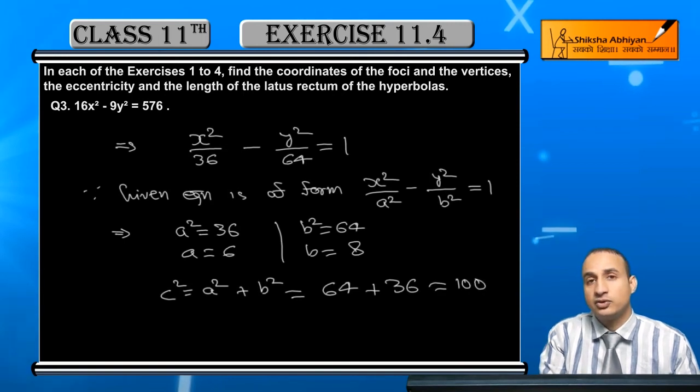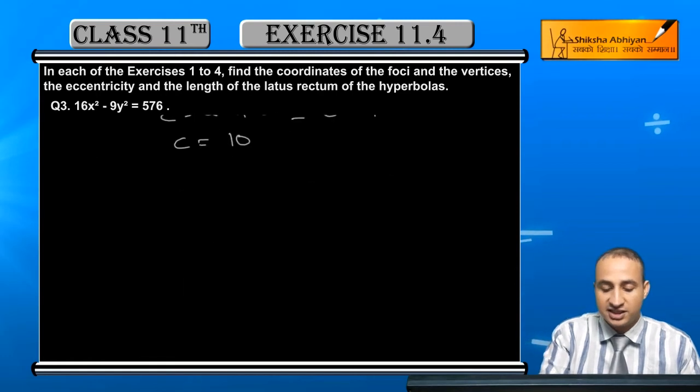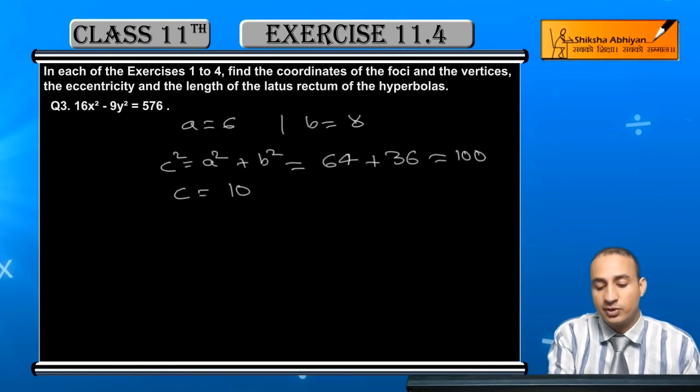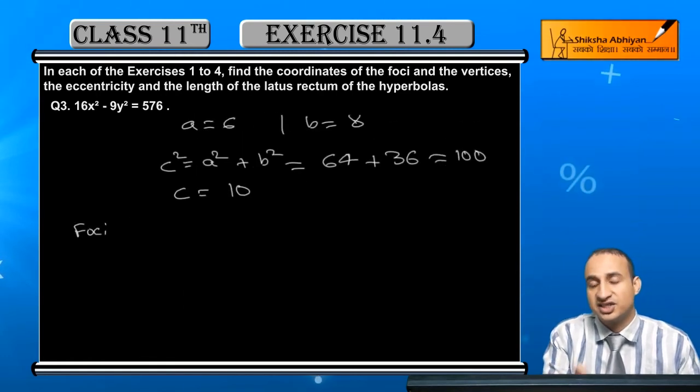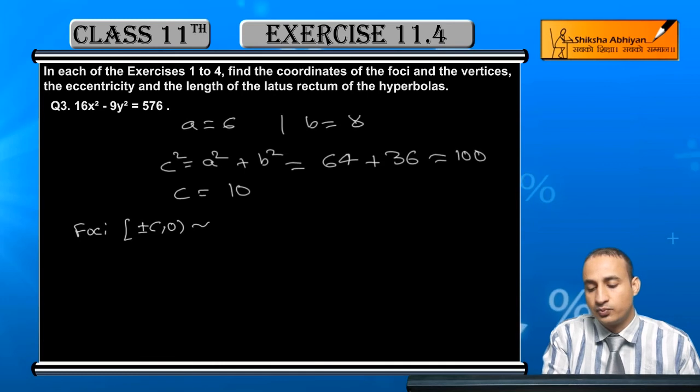First of all, for foci, what should be? For x-axis, foci by plus-minus c, 0. This is plus-minus 10, 0.